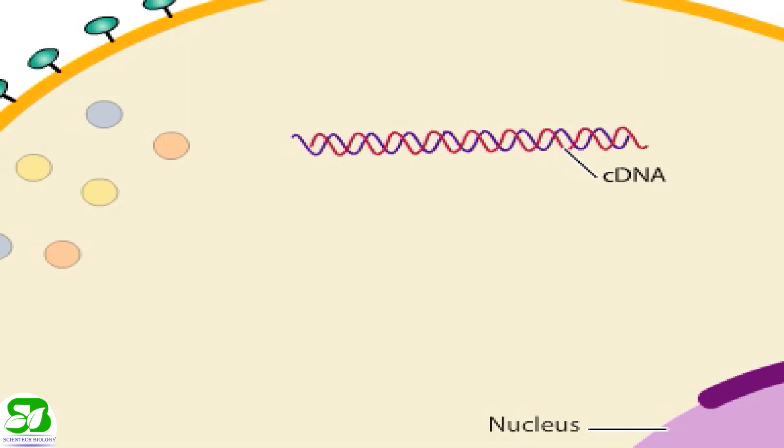Reverse transcriptase has a high error rate and frequently leads to mutations in the copied DNA. These mutations result in variant forms of HIV which allow HIV to evolve quickly.